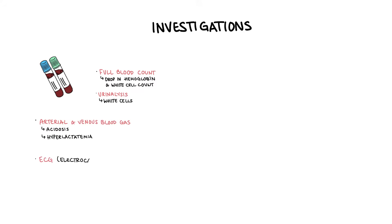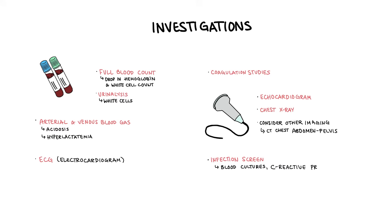Investigations to order for individuals with suspected shock include a full blood count, where you want to look for any drop in hemoglobin and the white cell count to see if they are septic. Urinalysis to check the white cells if there is an infection. Arterial and venous blood gas to check for acidosis and hyperlactatemia. An electrocardiogram, coagulation studies, an echocardiogram if possible, a chest x-ray. And you can consider further imaging, CT chest abdomen pelvis for example. An infective screen which includes blood cultures and C-reactive protein and procalcitonin, specifically if you are concerned of an infection.